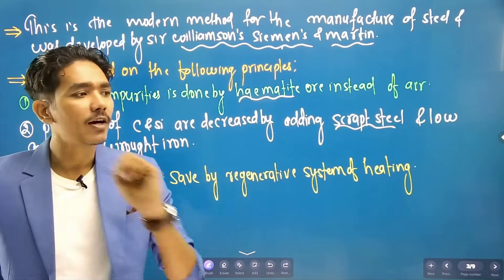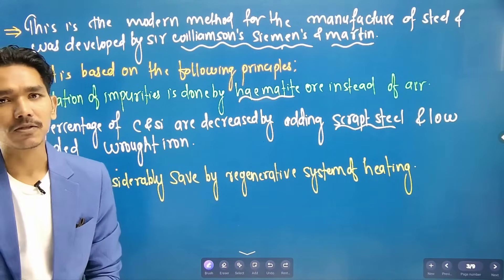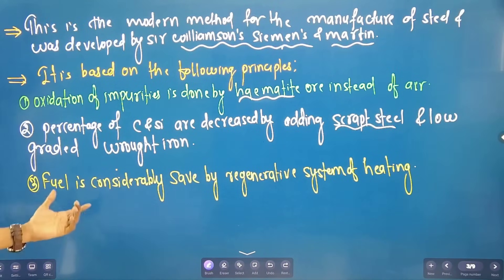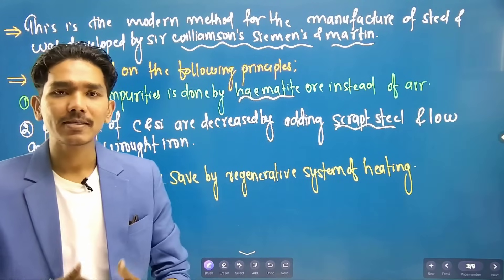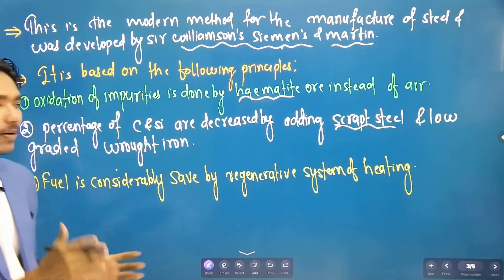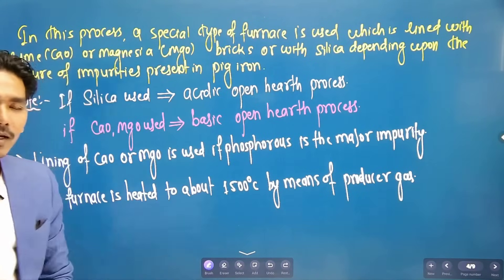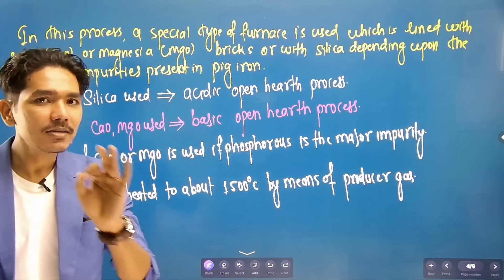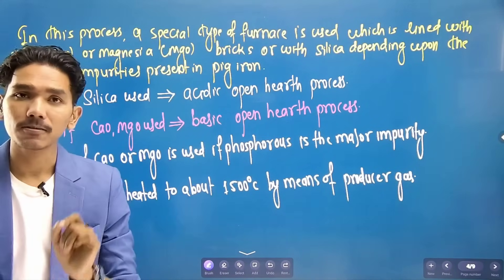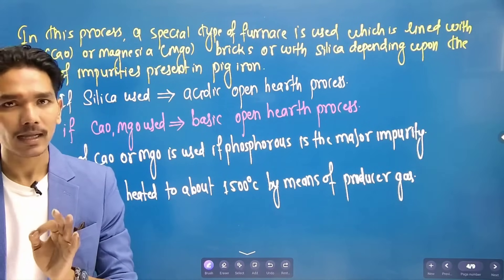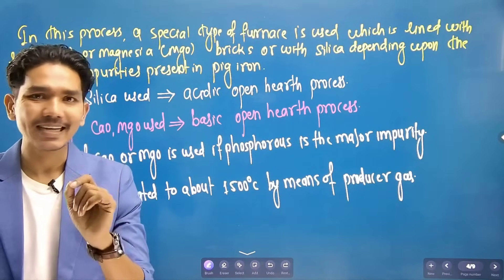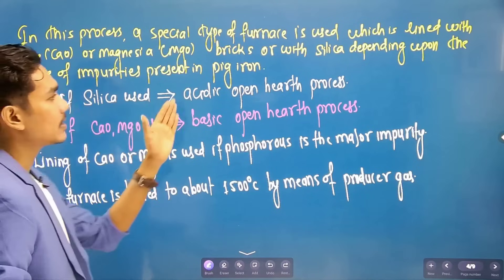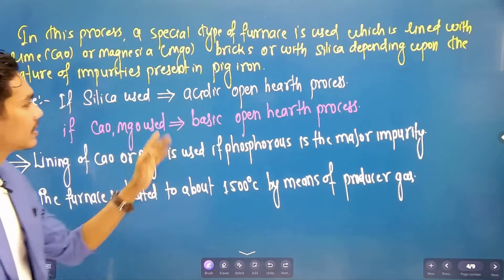The iron used is called pig iron or cast iron for its carbon content, and low-grade iron is also used. The fuel system is a regenerative system. We have a special type of furnace. We line it with acidic material or basic material — acidic lining uses silica, and basic lining uses magnesium oxide and lime. In the basic Open Hearth Process, we use the basic lining. Silica is acidic and calcium oxide is basic.